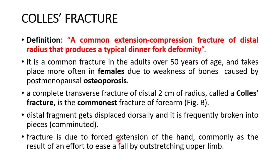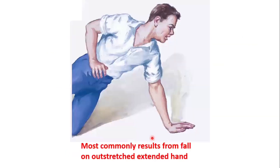The fracture is due to forced extension of the hand, commonly as a result of an effort to ease a fall by outstretching the upper limb — fall on the outstretched hand. This is trying to ease down the fall, and the fracture occurs at the distal end of the radius due to the transmission of force from the thenar eminence to the radius, and then to the humerus and the clavicle.